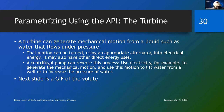A structural centrifugal pump can reverse this process - use electricity to generate mechanical motion. Whereas the pump uses electricity to generate mechanical motion, this motion can now be used to do other things, like lifting water, increasing the pressure of something, and then pumping things.